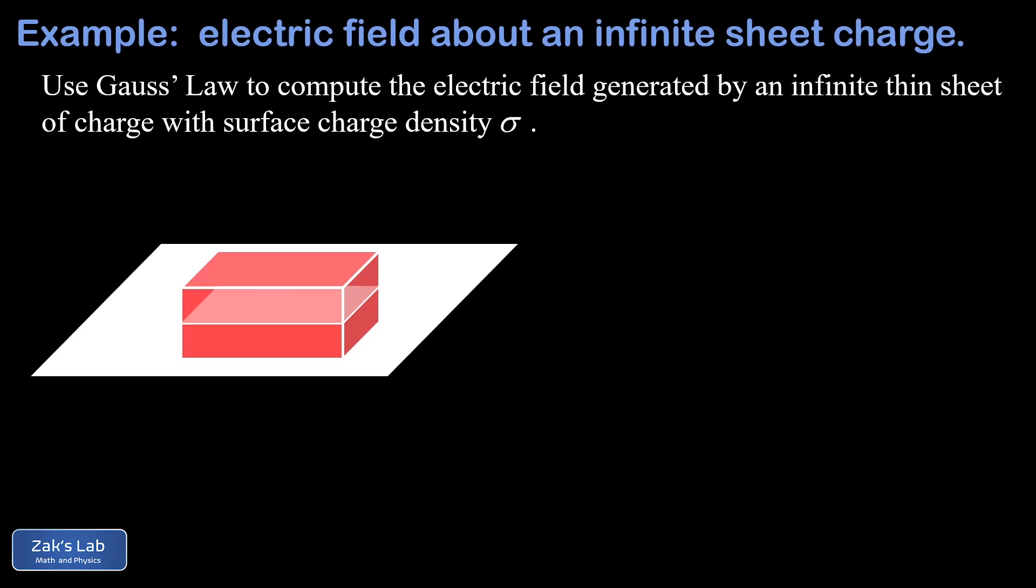The classic choice of Gaussian surface for this infinite thin sheet is called the Gaussian pillbox, just a little rectangular box. It extends the same distance below and above our infinite sheet.